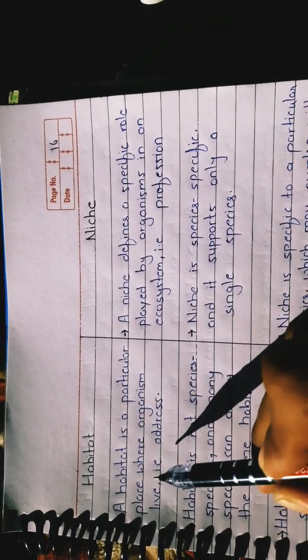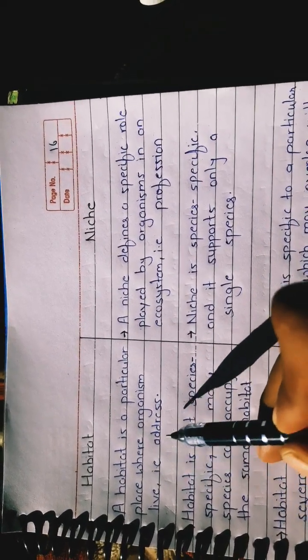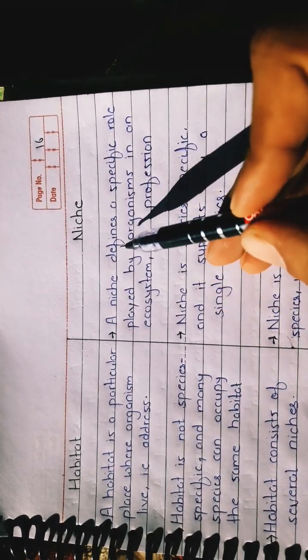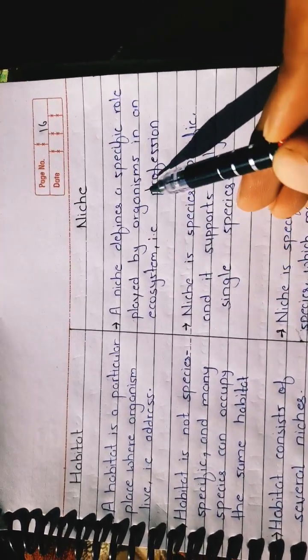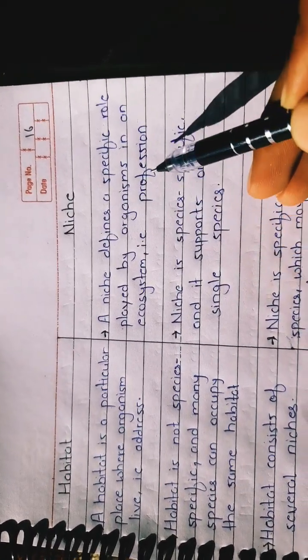A habitat is a particular place where organisms live, e.g., address. A niche defines a specific role played by organisms in an ecosystem, e.g., profession.